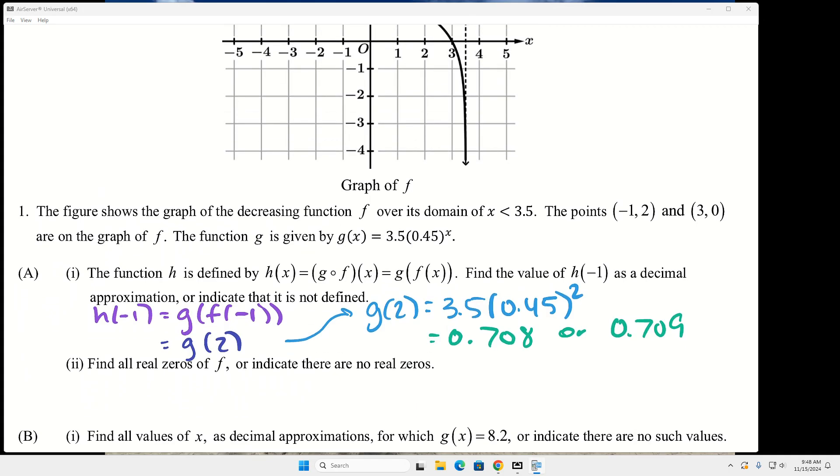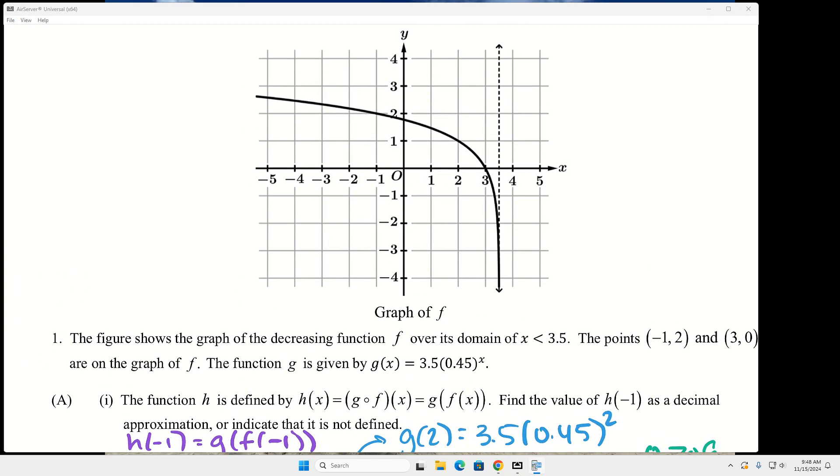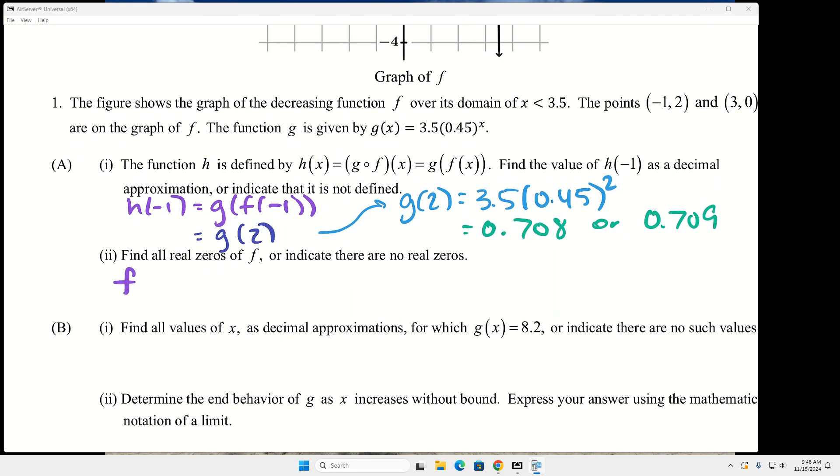And then for part two, it says to find all real zeros of f or indicate that there are no real zeros. So don't forget which is f and which is g. So f is the graph. What is the zero of f? Three. So I would just write a little statement that f has a real zero at x equals three, or you could say x equals three is a zero of f. There's lots of ways you can word it. I'm pretty sure all they're really looking for is that x equals three, but it doesn't hurt to practice perfection here.